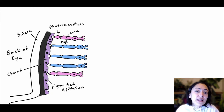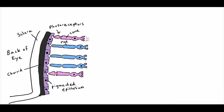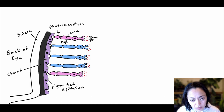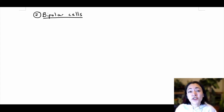Photoreceptors release chemicals that communicate with sensory neurons. These neurons that the photoreceptors communicate with are called bipolar cells. Bipolar cells are considered the first sensory neurons in the sensory projection pathway for vision.